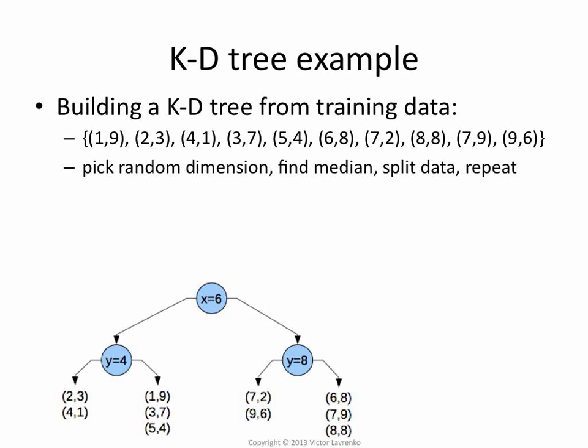So I would first split it on the six, and then look at the second attribute. The second numbers, and the median of the second attribute happens to be four in these numbers, and it happens to be eight in those numbers.